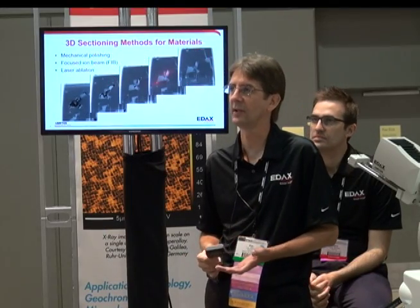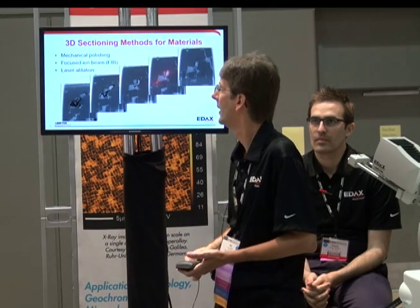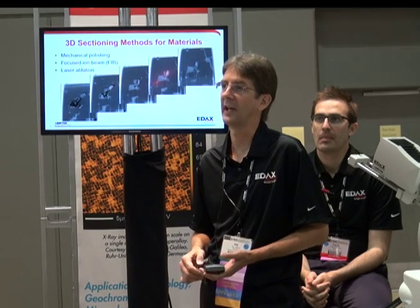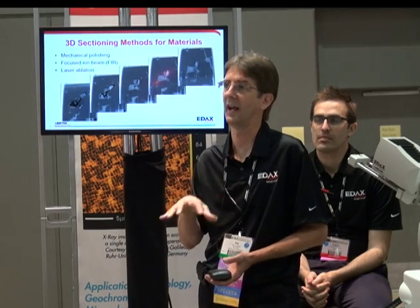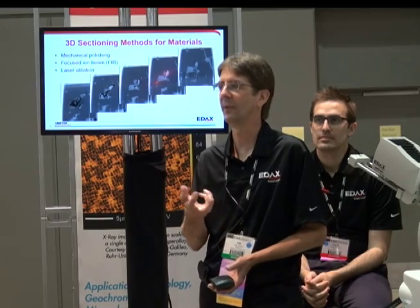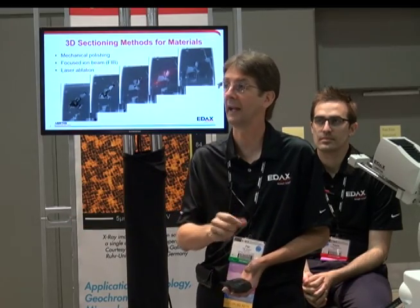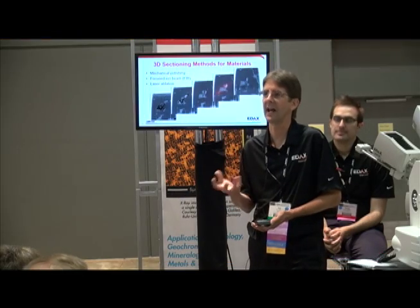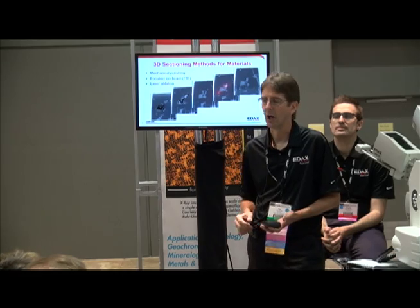There are a variety of methods to section materials — relatively hard, non-biological materials. Mechanical polishing is one; some institutes use robotics for mechanical polishing at known depths of material removal — they image analyze, grab the sample, take it out remotely, polish it, and put it back in. Focused ion beam is by far the most popular and will be used as our illustration. There's also laser ablation or laser-assisted evaporation of the top surface, which is becoming more popular due to added benefits over FIB.